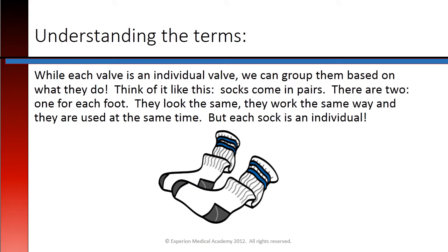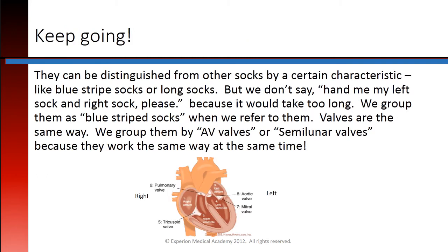While each valve is an individual valve, we can group them based on what they do. Think of it like socks — they come in pairs, one for each foot. They look the same, work the same way, and are used at the same time, but each sock is an individual. We can distinguish them by a characteristic like blue striped socks, but we don't say 'hand me my left sock and my right sock' because it takes too long. We group them as blue striped socks. Valves are the same way — we group them as AV valves or semilunar valves because they work the same way at the same time.